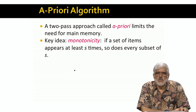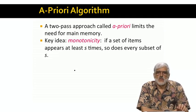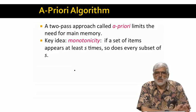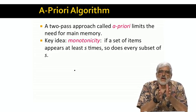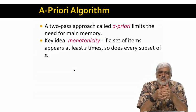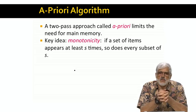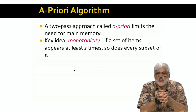The monotonicity property, which a priori exploits, says that if a set of items appears in at least s baskets, then so does each of its subsets. That should be obvious, since there are s baskets that contain all members of the set. So surely these s baskets also contain any of its subsets. And there may be more baskets that contain the subset, but not the full set.